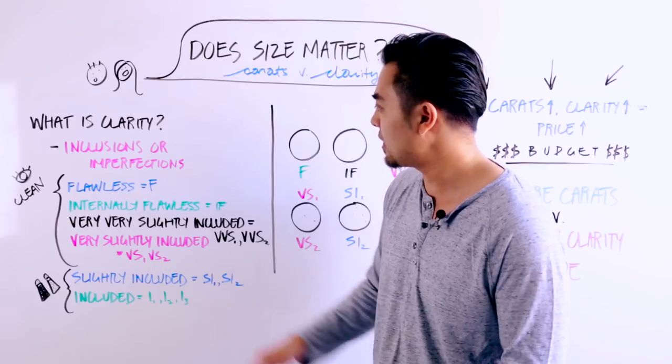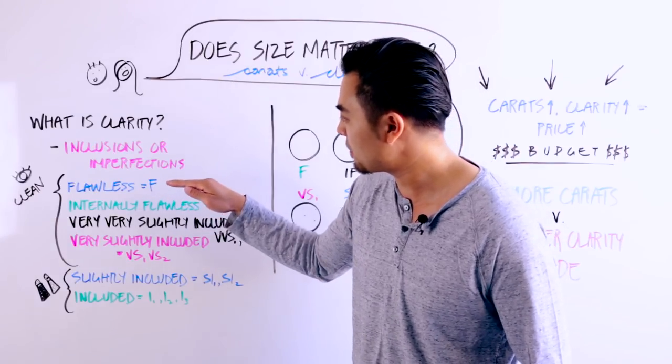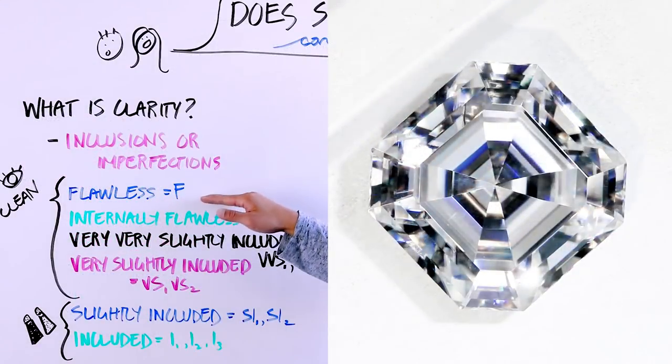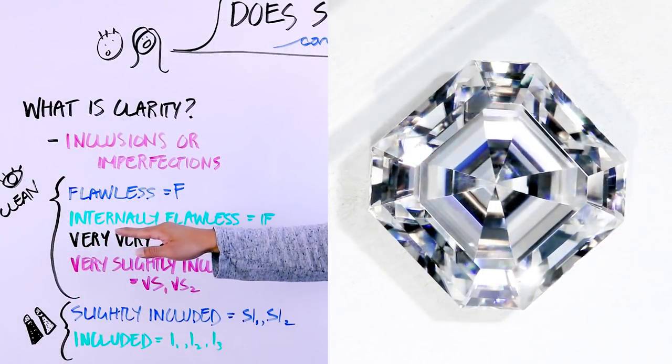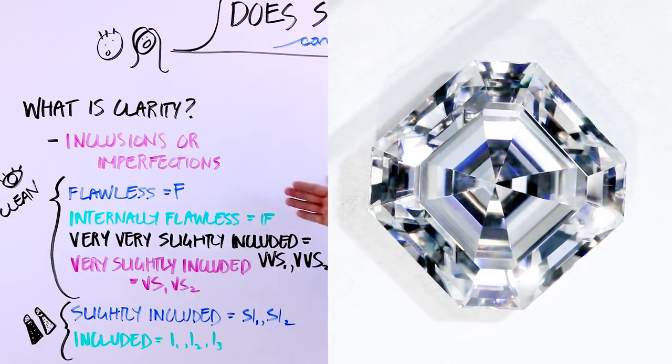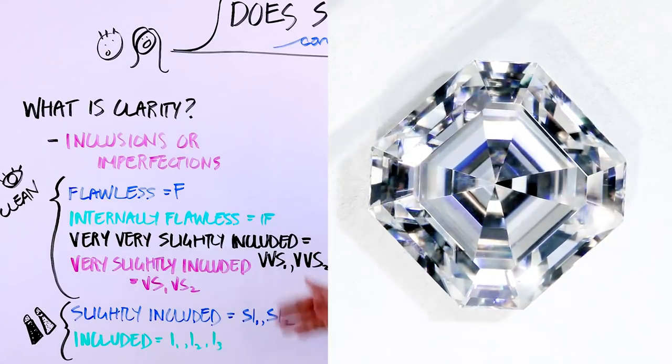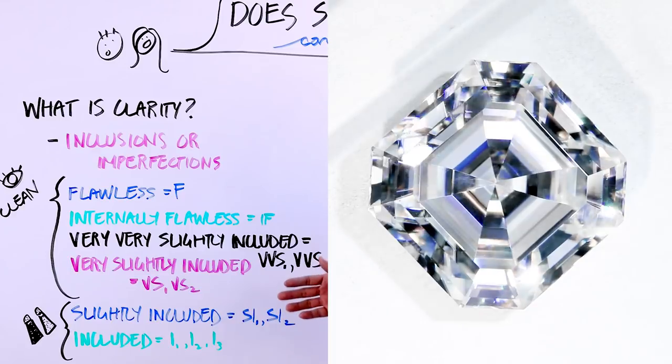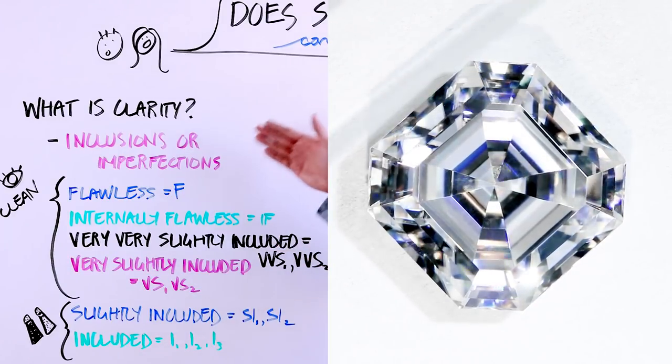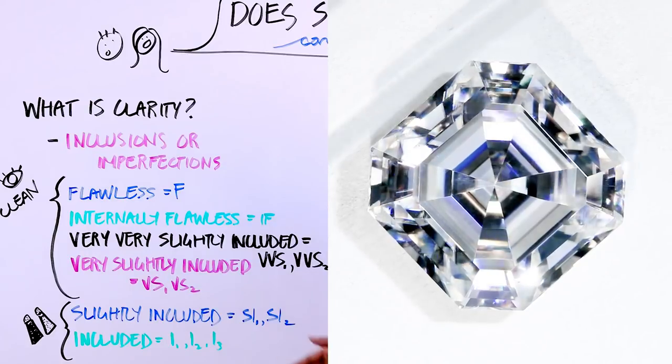So let me go ahead and go over the grades. So if you are to be able to find a flawless stone, basically the letter grade is an F. So internally flawless is the next step down, which is the letters to describe as an IF. You'll see these on grading reports, regardless if it's GIA, PGGL, or any other grading report. If they are grading a clarity grade, that's what you'll see.